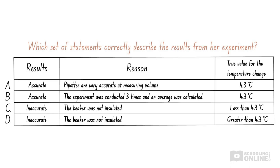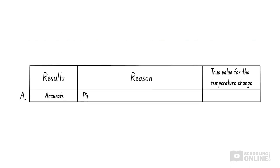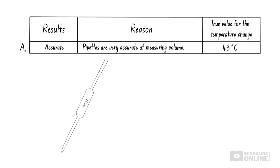Since this is quite a long multiple choice question, a good method of approach is to check each of the available options. Starting with option A, we know that pipettes are very accurate as they have a high resolution, so the volumes were measured accurately.